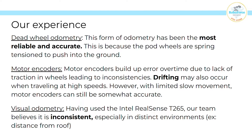We have tried all three of these, and this is our own experience. For dead wheel odometry, we believe this is the most reliable and accurate one because the pod wheels are sprung into the ground, so they're always staying in contact. For motor encoder odometry, we believe these will build up error over time due to the lack of traction in the wheels, leading to inconsistencies. Drifting also occurs when traveling at high speeds, but with limited slow movement it can still be somewhat accurate.